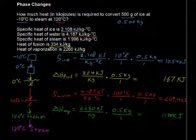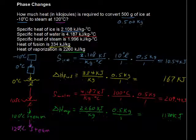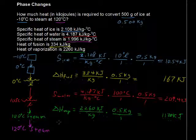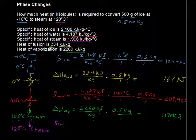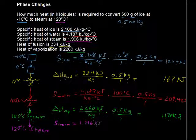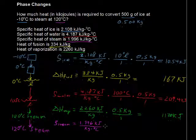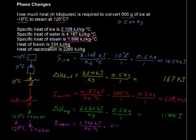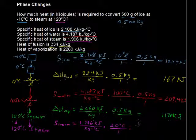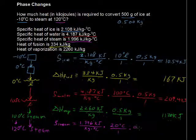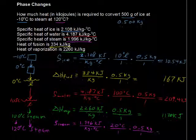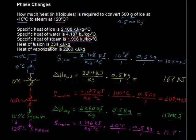It's still at 100 degrees, so we have to do a little bit more work. We're going to raise that 100 degrees steam up to 120 degrees steam, and for that we need the specific heat of steam, S_steam. That equals 1.996 kilojoules per kilogram per degree Celsius. We are raising it 20 degrees, from 100 to 120, and we multiply by our 0.5 kilograms. That gives us 19.96 kilojoules.